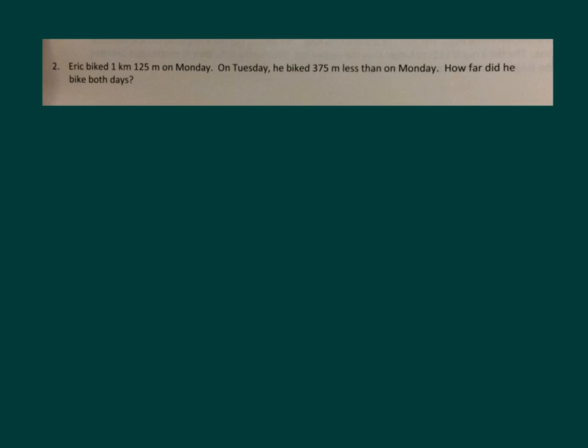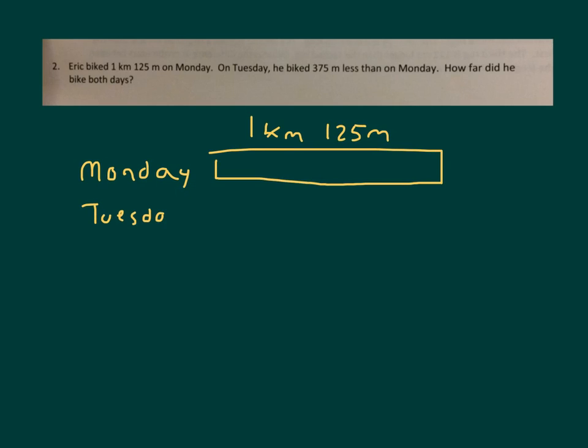Here is the second problem. It says Eric biked 1 kilometer, 125 meters on Monday. So let's write, and let's make a bar and a tape diagram for the amount that he biked on Monday. It is a known. 1 kilometer, 125 meters. On Tuesday, it says that he biked 375 meters less than on Monday. So let's make a bar for Tuesday.